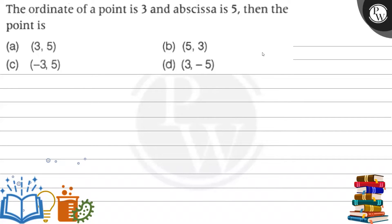Hello guys, let's solve this question. The question says the ordinate of a point is 3 and abscissa is 5, then the point is.